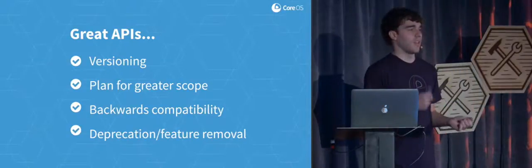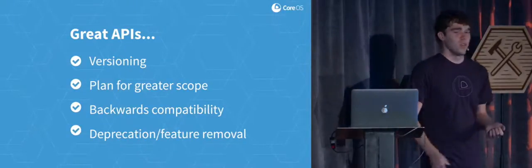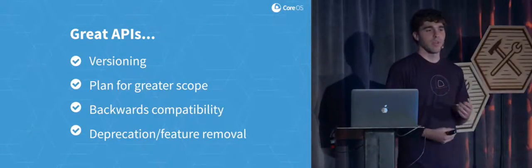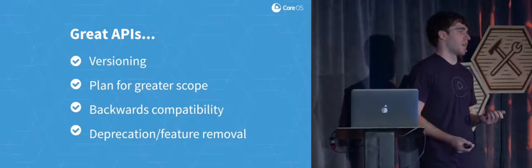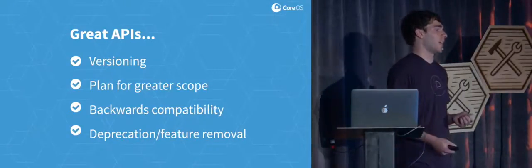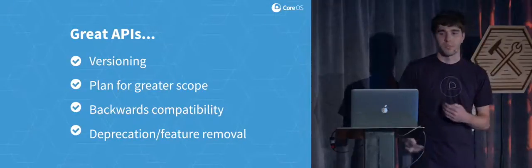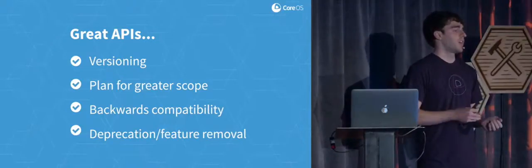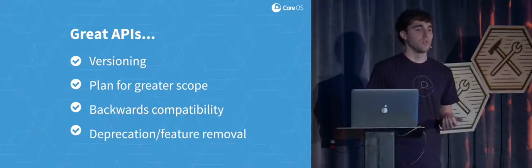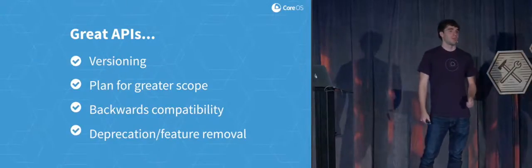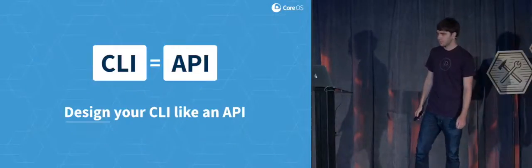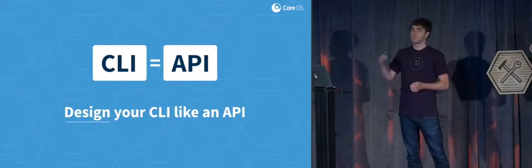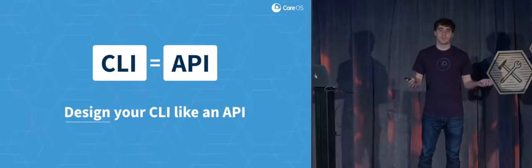Great APIs, when you think about it, have really strong versioning schemes. They have plans for backwards compatibility — you can break this if you're careful about it. They're planning for greater scope over time, so as they build their business out, there's going to be more functionality, more parameters, more access control. And when they do remove a feature, they have a plan for it, well shared with you, so you can answer: do I feel really good about building my business on this piece of software? You need to design your CLI like an API to have all these benefits.